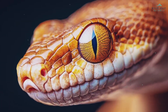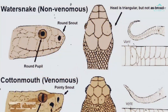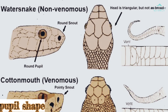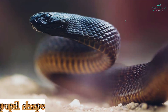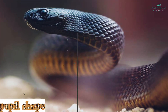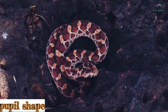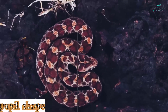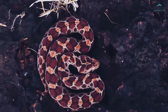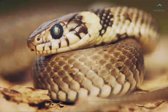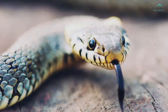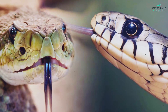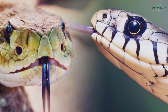The shape of a snake's pupils can also be a clue. Venomous snakes have cat-like vertical slit pupils, which are well adapted for hunting and striking prey. These elliptical pupils allow for better focus and vision in low light conditions. In contrast, non-venomous snakes typically have round pupils, as they do not rely as heavily on advanced night vision.